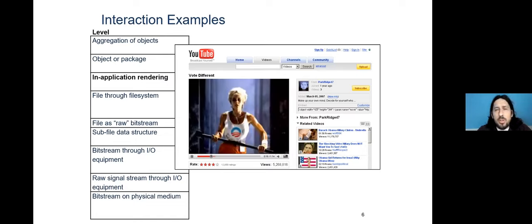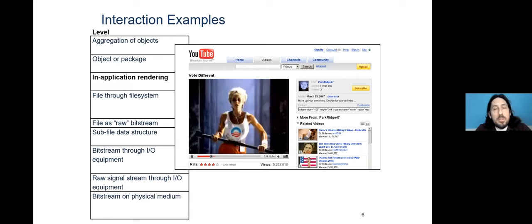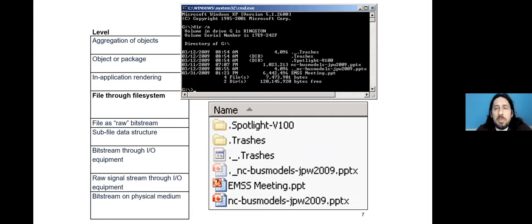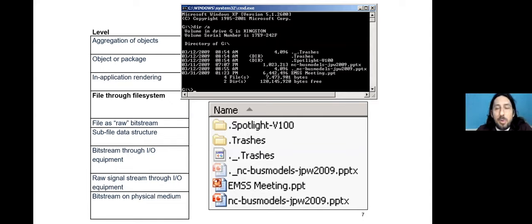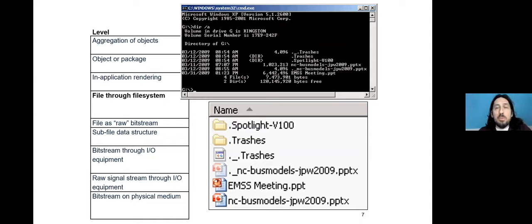For a video from an election-related collection, you'd want to encounter it in the browser as it would have appeared at the original time. The file through the file system can be encountered via the command line interface or the graphical user interface. Using the 'dir /a' command — equivalent to 'ls' in Linux — shows all hidden files, including traces not readily visible with normal operating system settings.